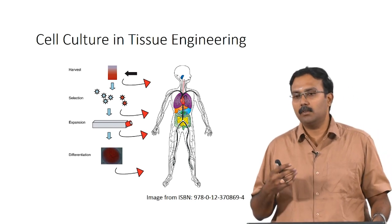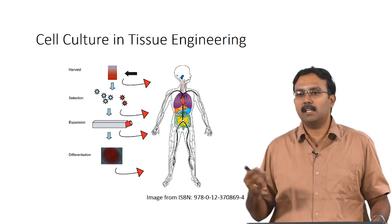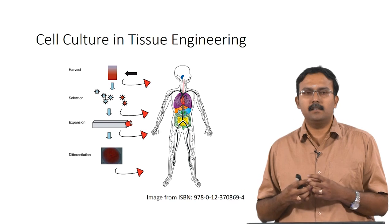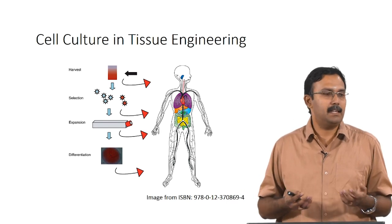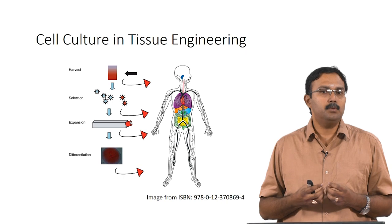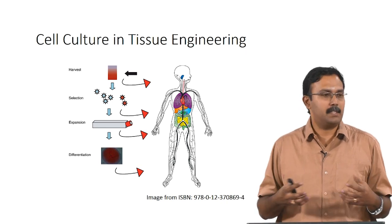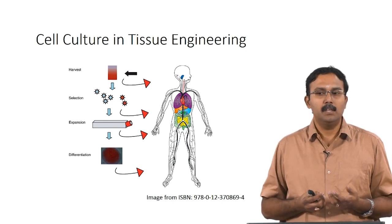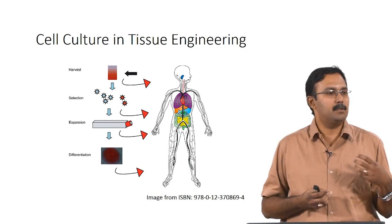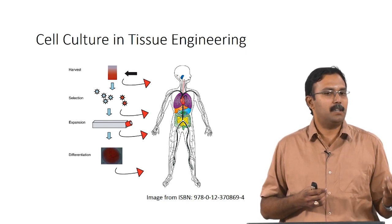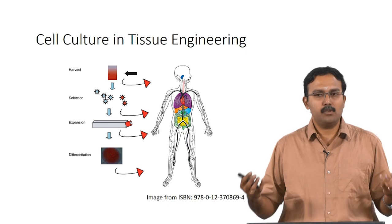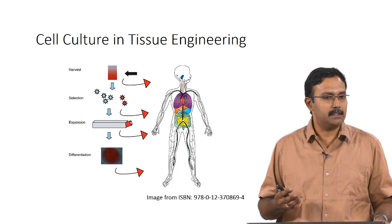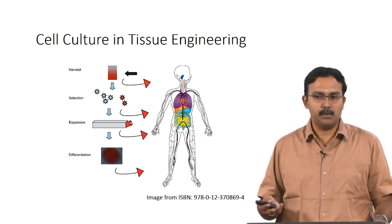Harvesting just means taking cells from a tissue — it could be from different tissues. You take out the tissue of interest, and there could be some simple mechanical digestion or simple treatment to get a mixture of cells from the harvested tissue. That mixture could be used as the cells itself. One example would be just using platelet-rich plasma where not much selection is done — it is primarily just harvesting and using it.